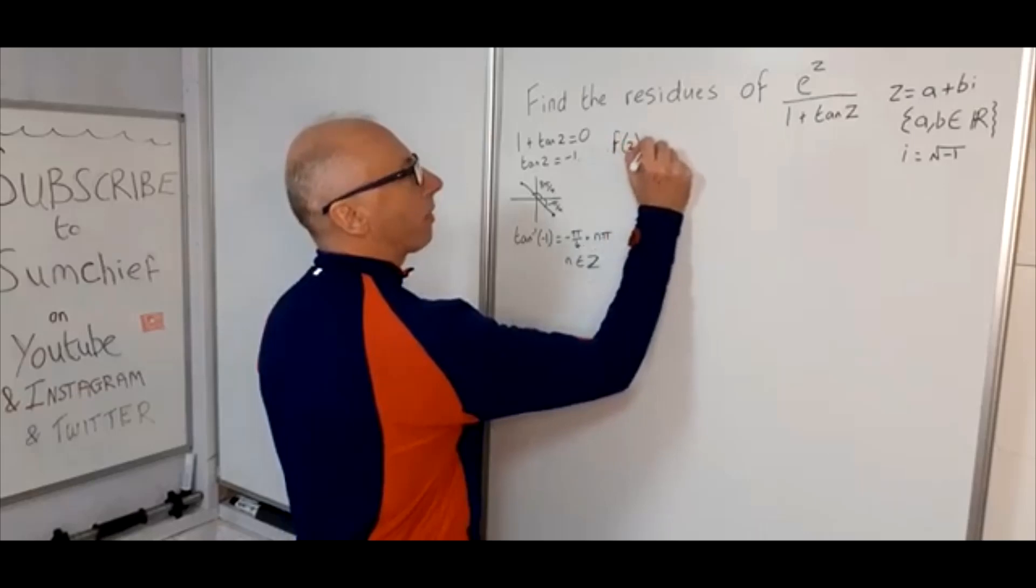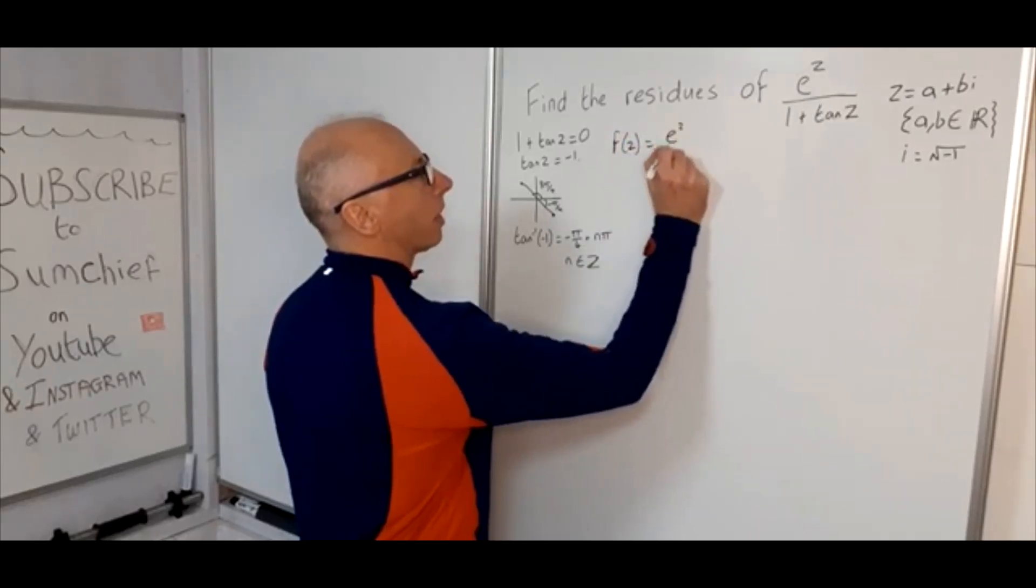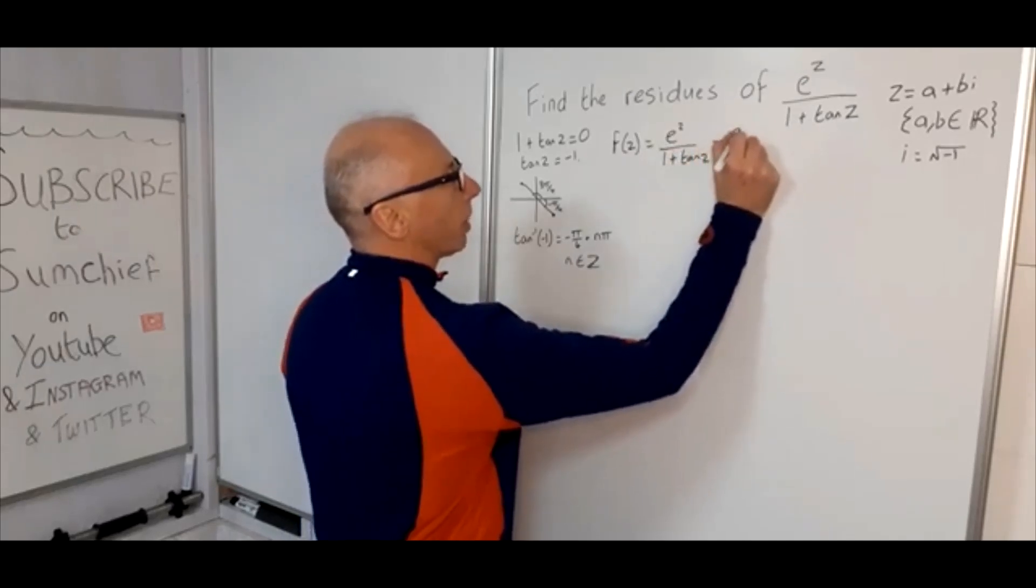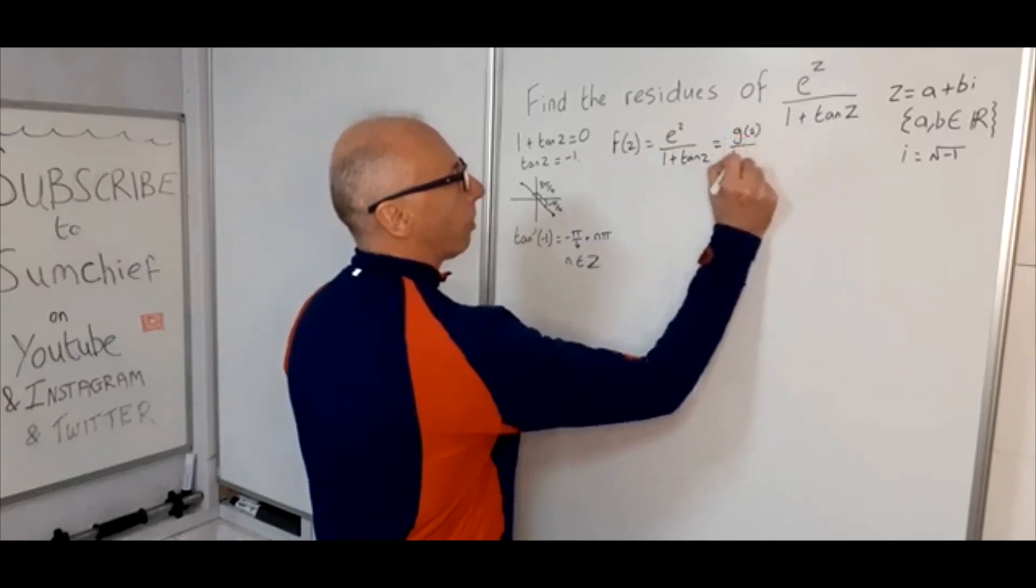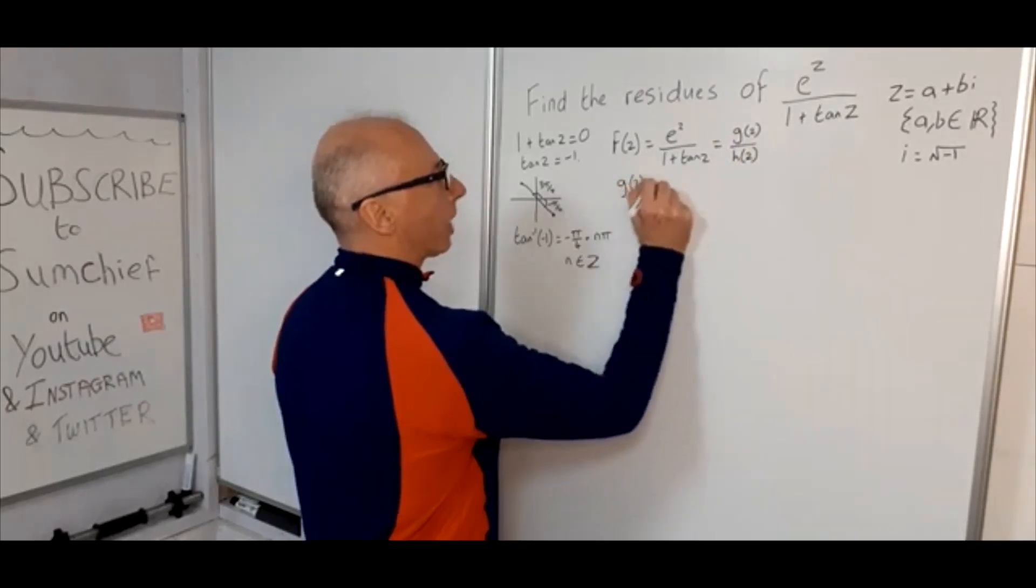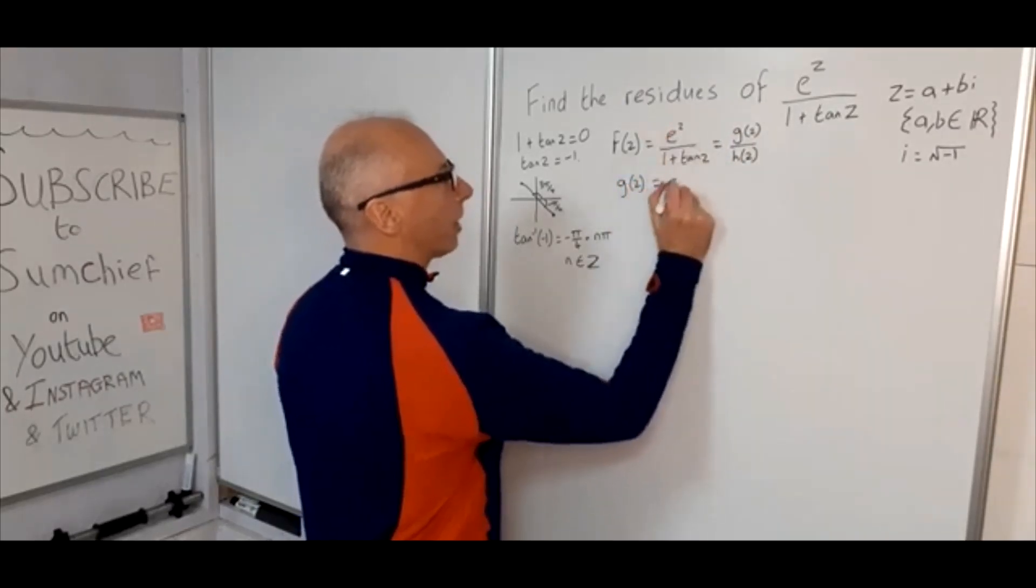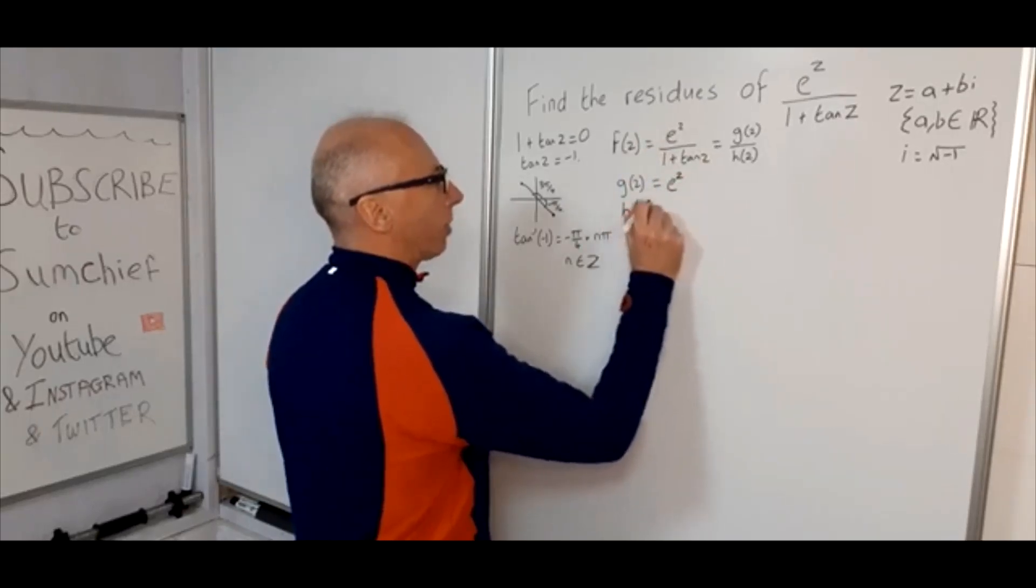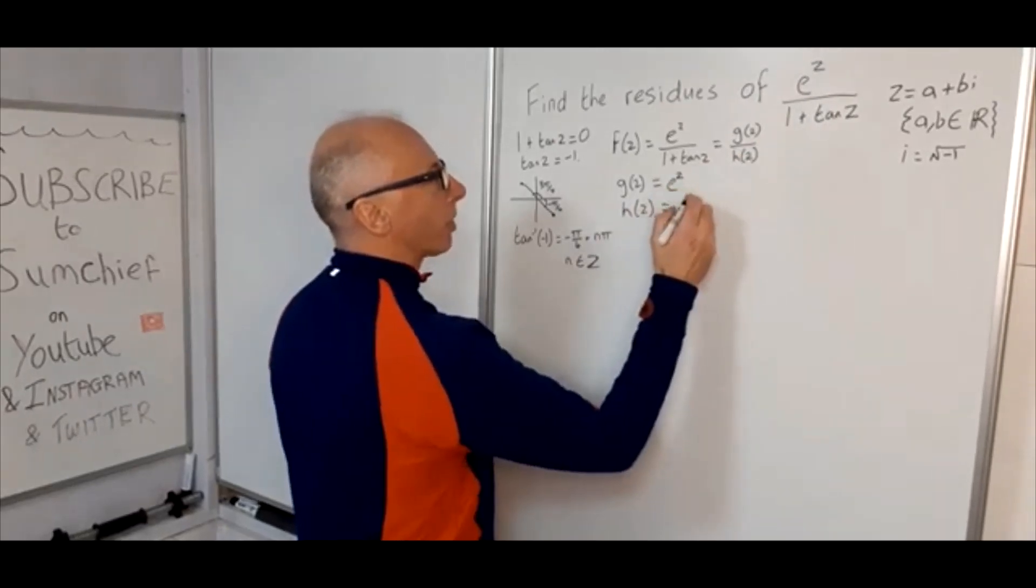So we can say f(z) equals e^z over 1 plus tan(z), which equals g(z) over h(z). So now we're going to nominate g(z) as e^z—that's our numerator—and h(z) equals 1 plus tan(z).